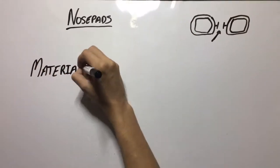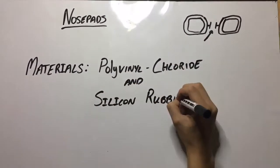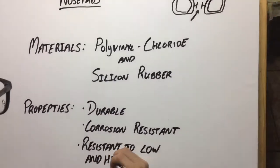Nose pads are mostly made out of polyvinyl chloride and silicone rubber, and their main properties are quite similar.